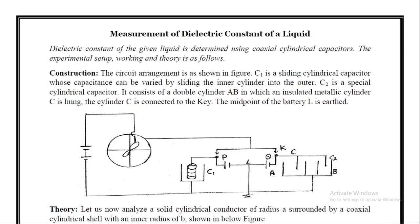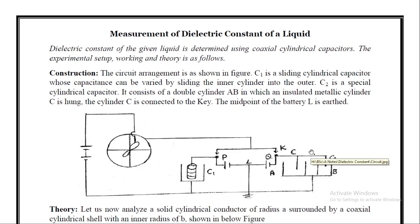The circuit arrangement is as shown in the figure. Capacitor C1 is a sliding cylindrical capacitor whose capacitance can be varied by sliding the inner cylinder into the outer. C2 is a special cylindrical capacitor. It consists of a double cylinder AB in which an insulated metallic cylinder C is hung. The cylinder C is connected to the key. The midpoint of battery L is earth.